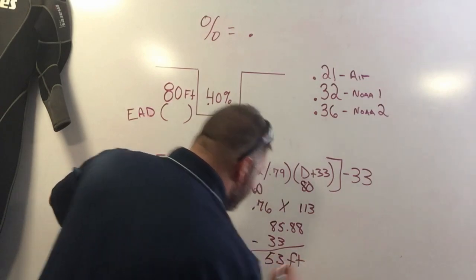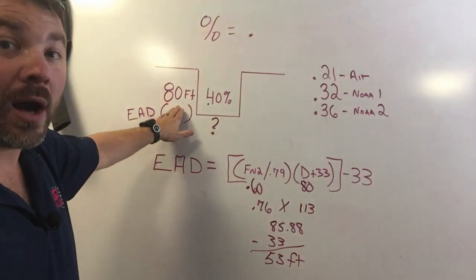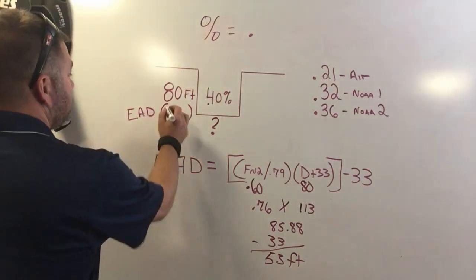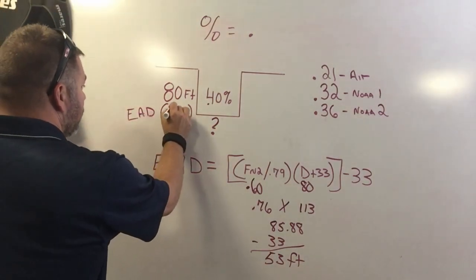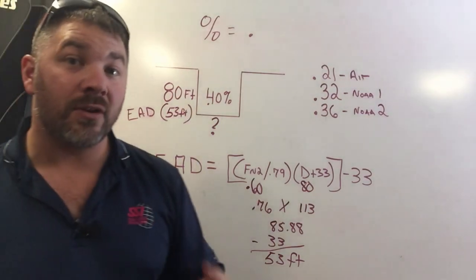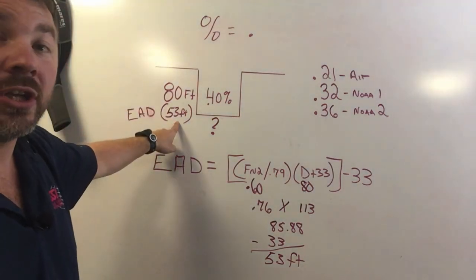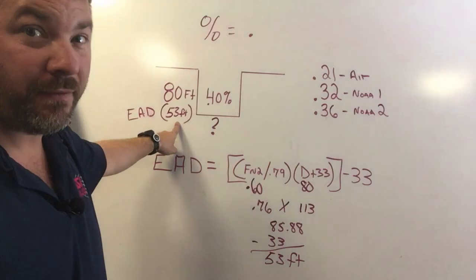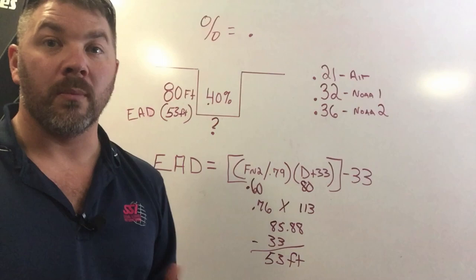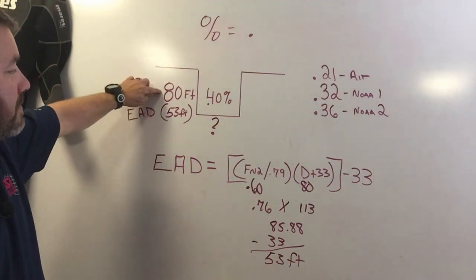What that tells me is the equivalent air depth to 80 feet while using 40% nitrox or enriched air is actually 53 feet. So I'm going to come back up here and I'm going to write 53 feet as my equivalent air depth. When I use the standard air tables to calculate an 80 foot dive, I'm actually going to calculate a 53 foot dive to get my maximum bottom time or my no decompression limit or my doppler limit.